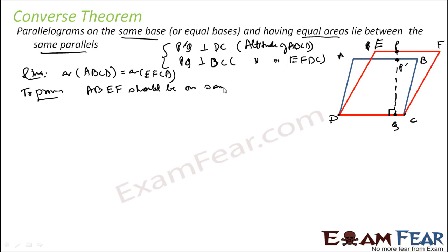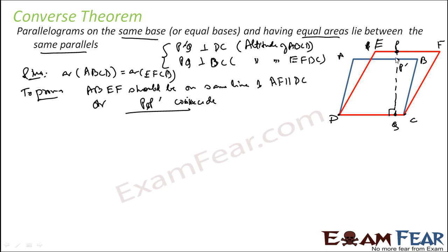A, B, E, F should be on the same line. And that line should be parallel to BZ. That is possible only when P and P' coincide. So that is what we have to prove — if P and P' coincide, then A, P, P', F will all be on the same line and that line will be parallel to DC. We have to prove that if area of ABCD equals area of EFCD, then P and P' coincide.